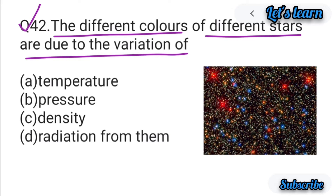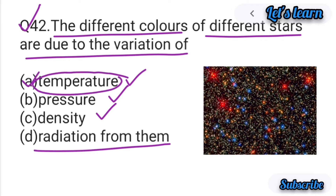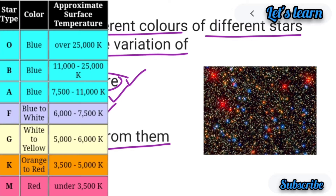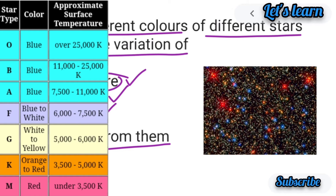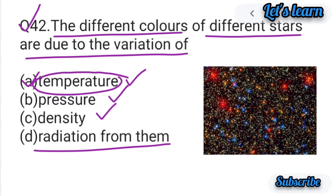Question number 42: The different colors of different stars are due to the variation of — अलग-अलग star का अलग-अलग color होता है, किसके variation की वजह से? Options: temperature, pressure, density, or radiation. Option A — temperature — is correct. Star का temperature अगर 7500 से 25,000 Kelvin हो तो color blue होगा; 6000–7500 K पर blue to white; 5000–6000 K पर white to yellow; 3500–5000 K पर orange to red; और 3500 K से नीचे हो तो color red होगा। Temperature के variation की वजह से different stars का color different होता है।